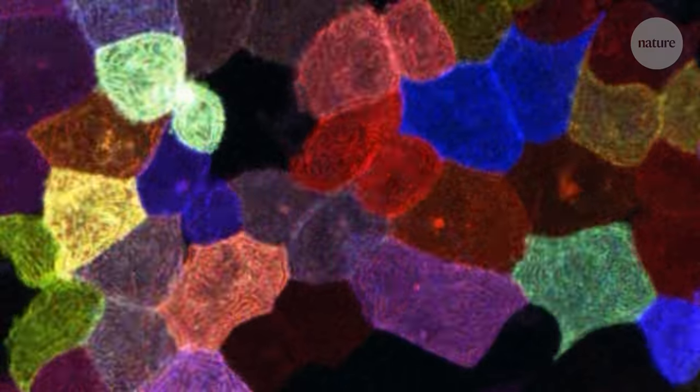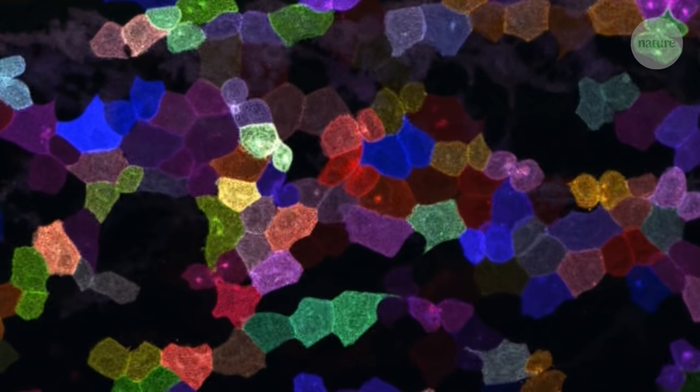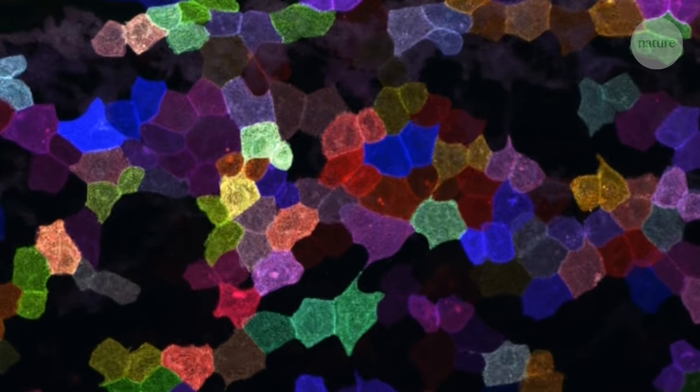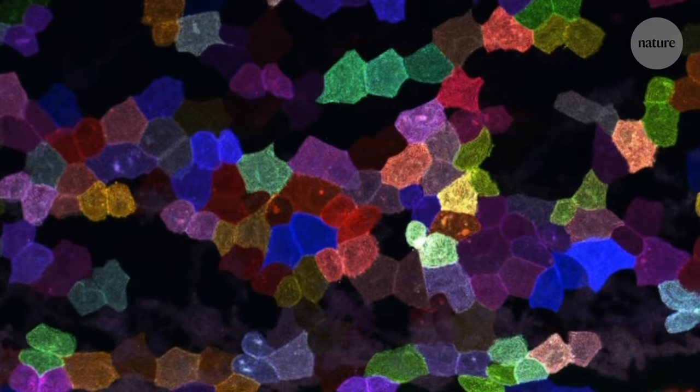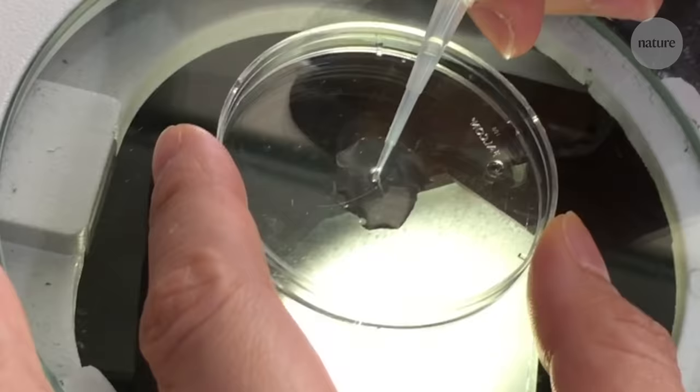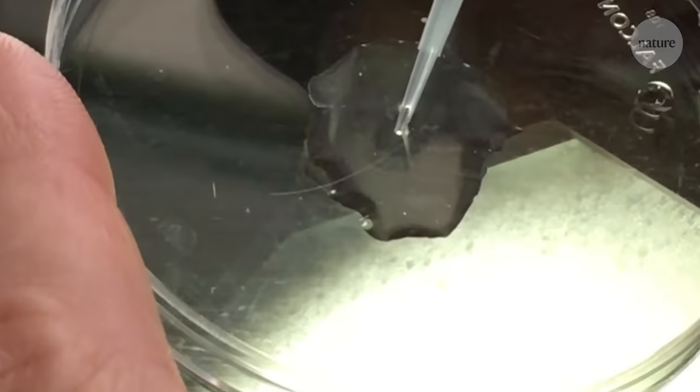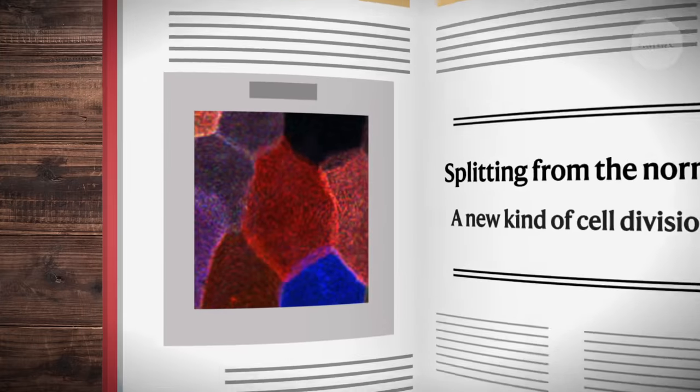These cells are dividing in a very unusual way, without replicating their DNA. When we first saw it, we weren't sure whether what we saw was real, because this is not how we know cell division from the textbook. But it was real. A team of scientists have discovered a whole new, previously unknown kind of cell division, and they even have an idea of why this textbook-busting event happens.